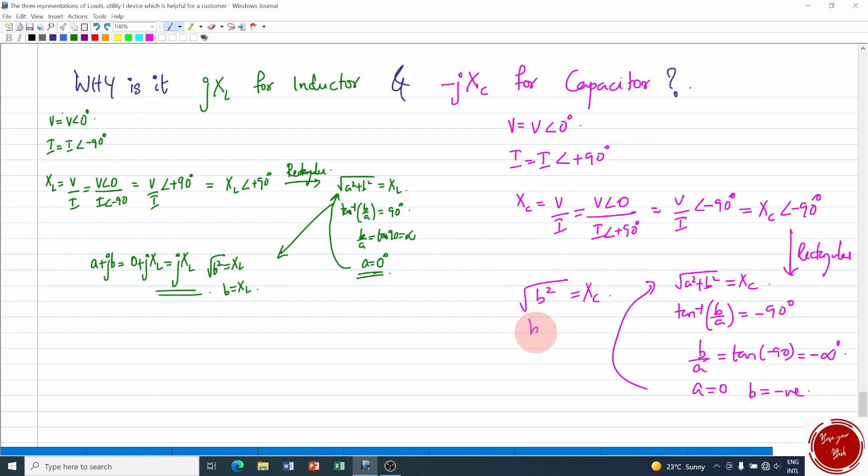Substituting over here you get √(b²) = XC or b = -XC. Now the format a + jb which is 0 - jXC or -jXC.